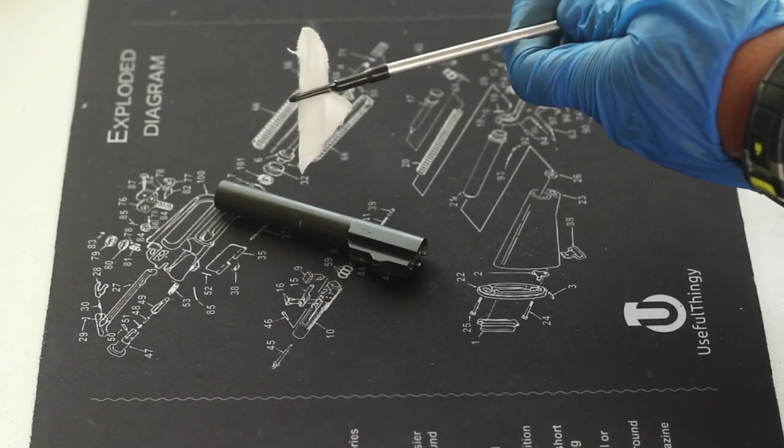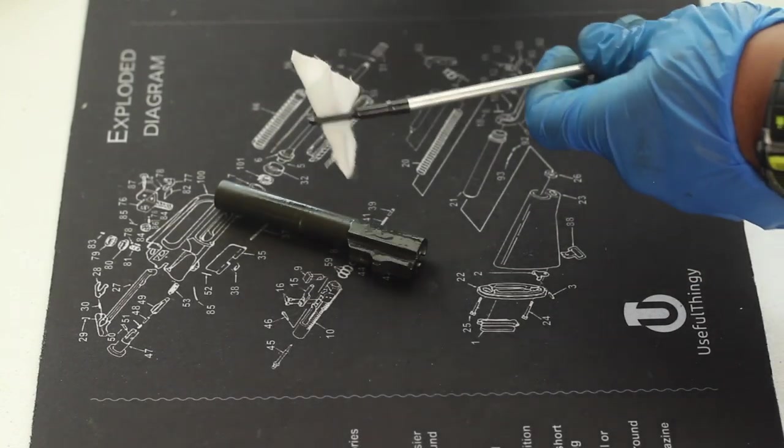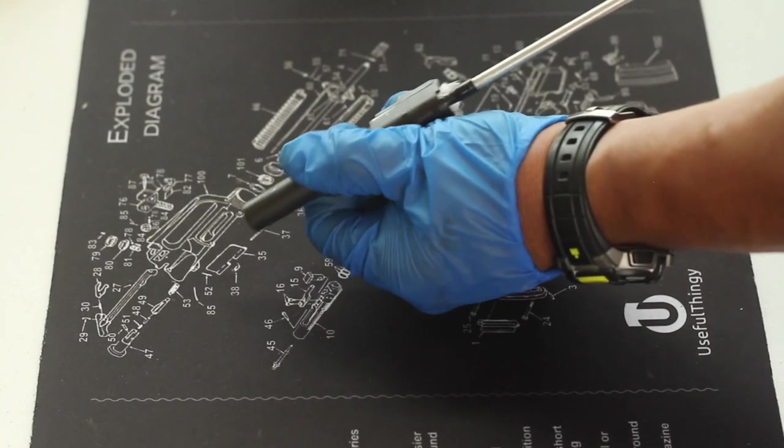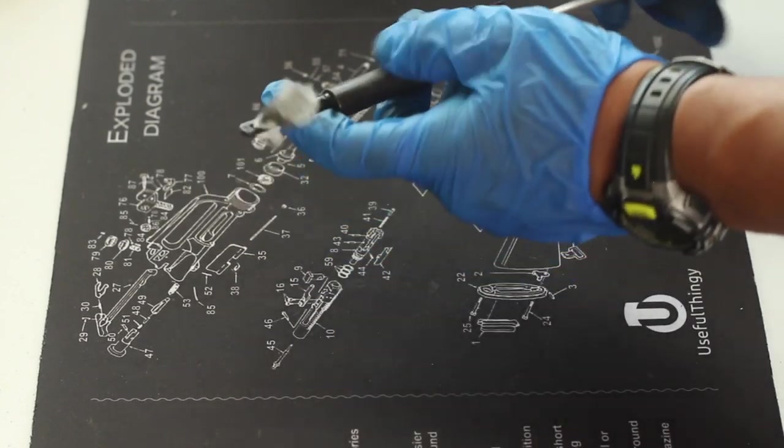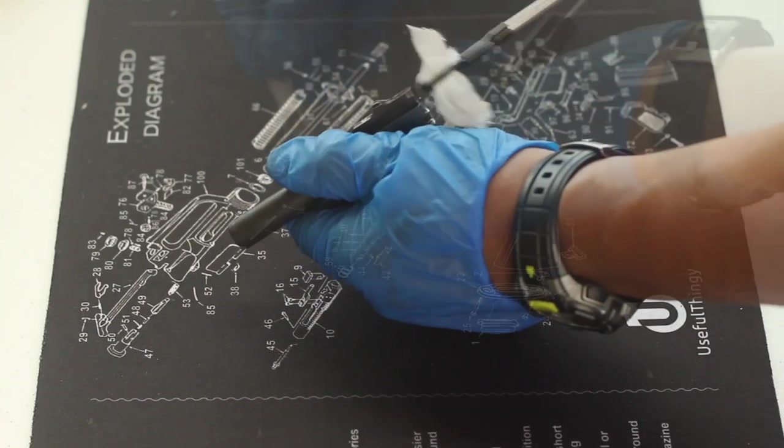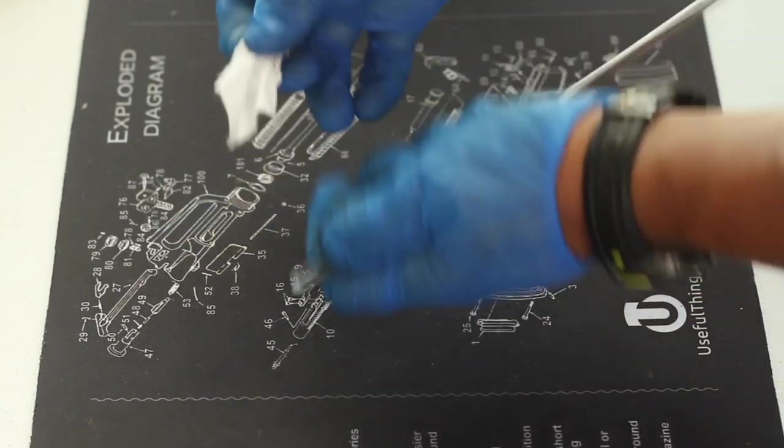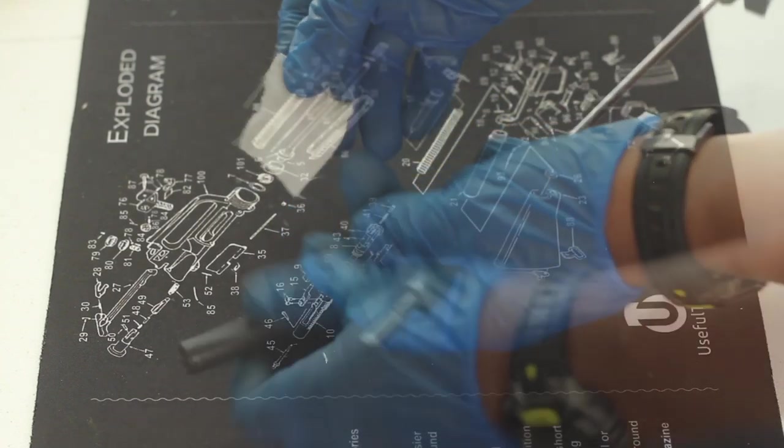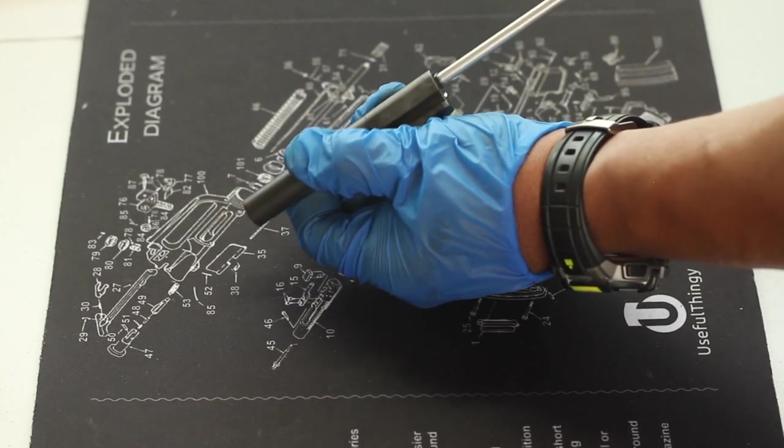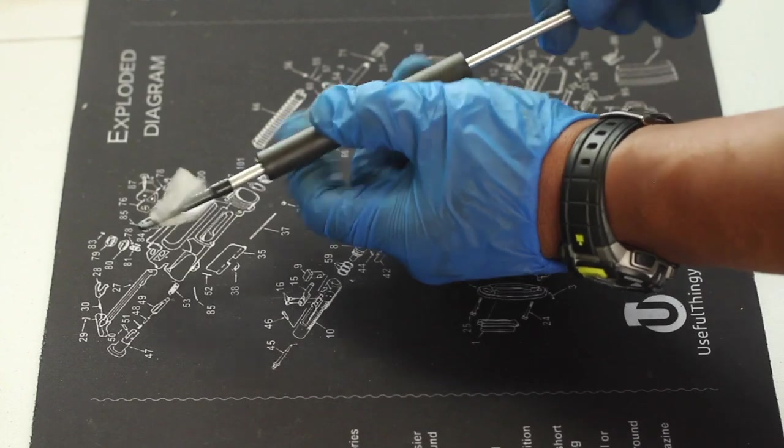Remove the bore brush from the cleaning rod, attach the patch holder, put a patch on, spray solvent on the patch. And just like the bore brush, only do this one way from chamber end to muzzle end. Spray the patch, push it through, take off the dirty patch, put a clean one on, and push it through again.